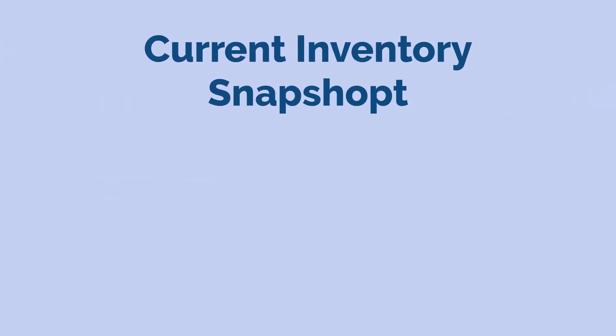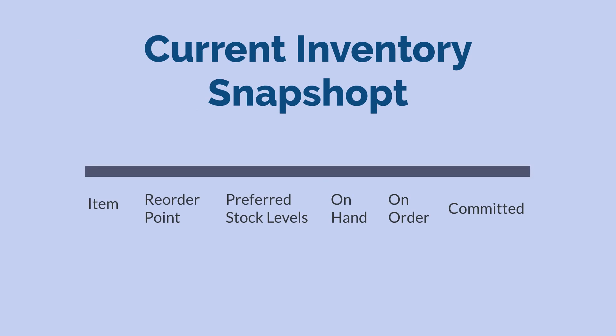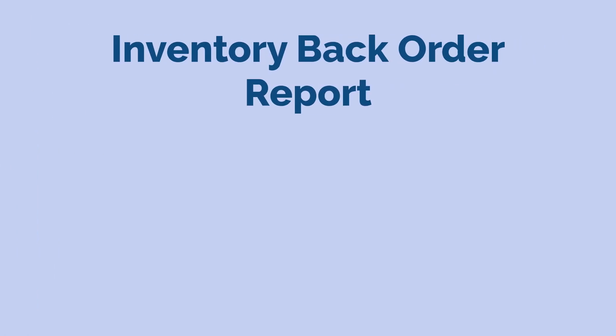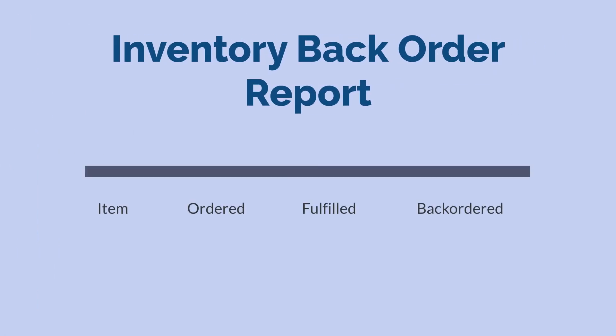The Current Inventory Snapshot report allows you to establish schedules for ordering inventory based on reorder points and preferred stock levels. At times, you may find that you have committed items on orders that are not actually in your inventory. With the Inventory Backorder Report, you will be able to identify any items that need to be placed on backorder. This report will also help you identify trends for items that are regularly on backorder, giving you the information you need to potentially adjust the preferred stock levels and reorder points for those items.